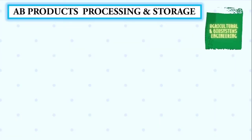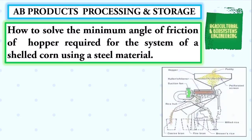Welcome to another tutorial video regarding AB Products Processing and Storage. This time, I will show you how to solve for the minimum angle of friction of a hopper required for the system of a shelled corn using a steel material. I will be solving this problem to show you how it is done.